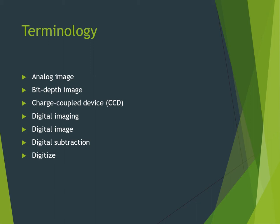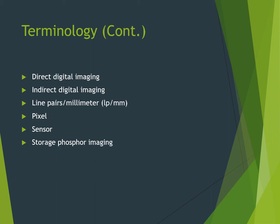Digital subtraction is a feature of digital imaging where the grayscale of an image is reversed: anything that was radiolucent will appear white and anything that was radiopaque or white will now appear black. Digitize, in digital imaging, means to convert an image into a digital form that can be processed by a computer. Direct digital imaging is a method where an intraoral sensor is exposed to x-radiation to capture a dental image viewable on a computer monitor. Indirect digital imaging involves scanning the sensor following x-radiation exposure and then converting it into digital form.